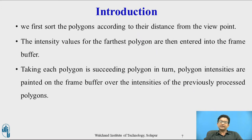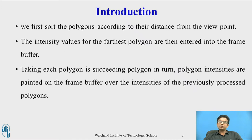Using a similar technique, we first sort the polygons according to their distance from the viewpoint. The intensity values of the farthest polygons are then entered into the frame buffer. Taking each polygon in turn in decreasing depth order, polygon intensities are painted on the frame buffer over the intensities of previously processed polygons.